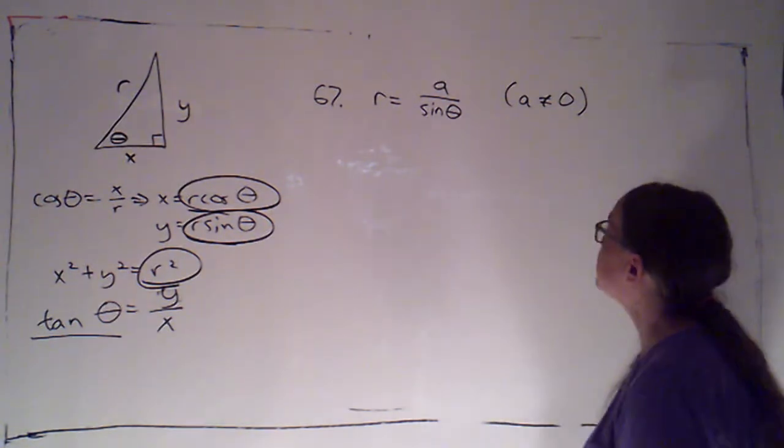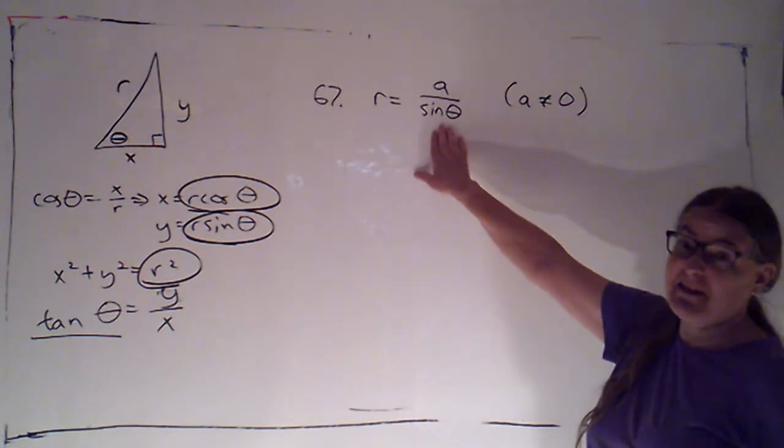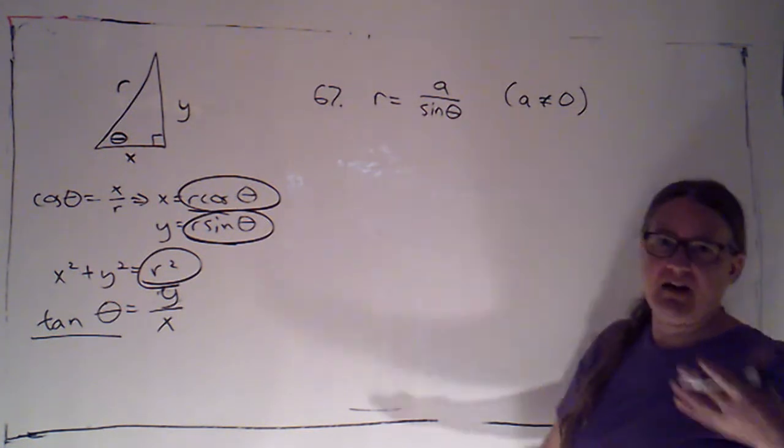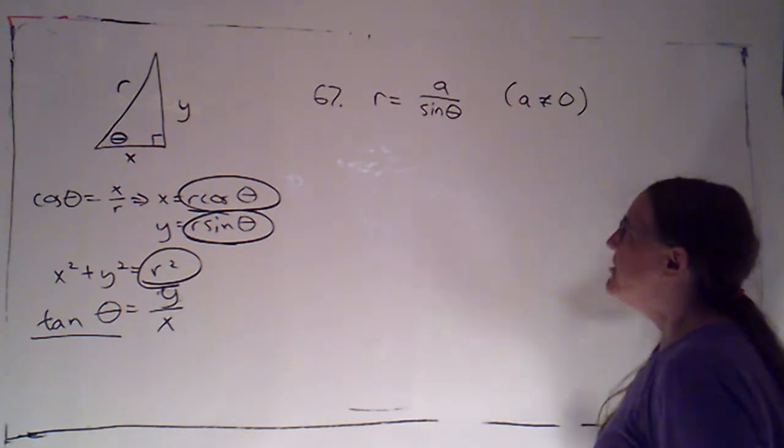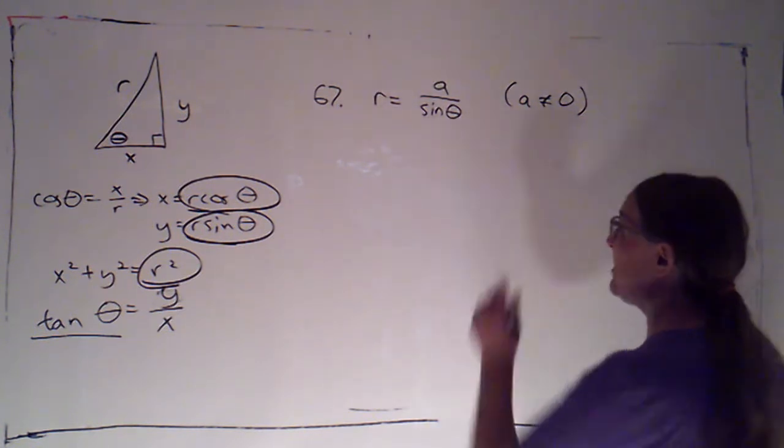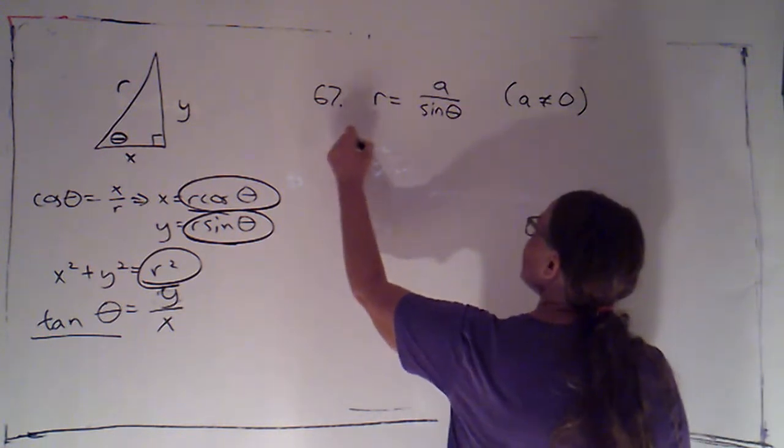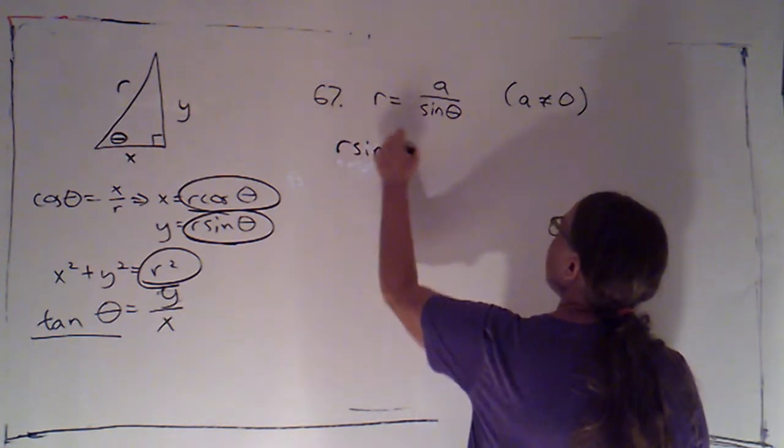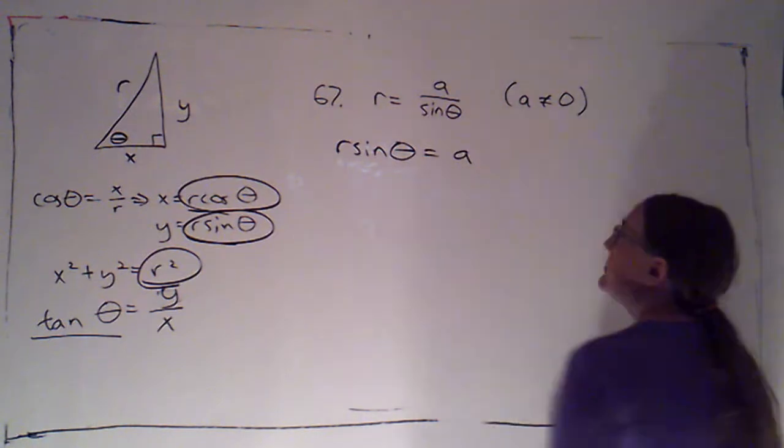All right, first thing I want to do is get that sine theta out of the denominator. For one thing, I'm not crazy about having stuff in the denominator. For another thing, I think that's going to move it over with the r, and that might be helpful. So if I multiply both sides by sine, I'm going to get r sine theta is equal to a.